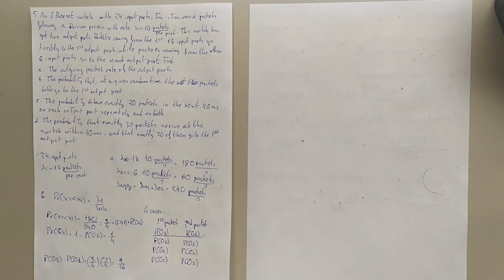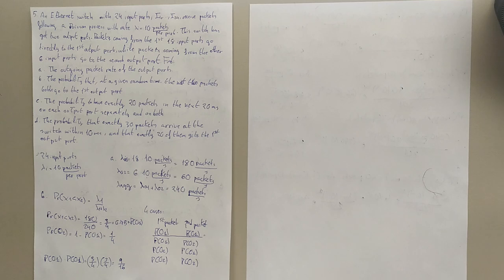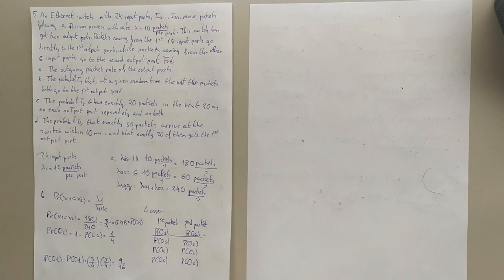The problem asks us to find the outgoing packet rate of each output port, the probability that at a given random time the next two packets both go to the first output port, the probability of having exactly 20 packets in the next 20 milliseconds on each output port separately and on both, and also the probability that exactly 30 packets arrive at the switch within 10 milliseconds and that exactly 20 of them go to the first output port.